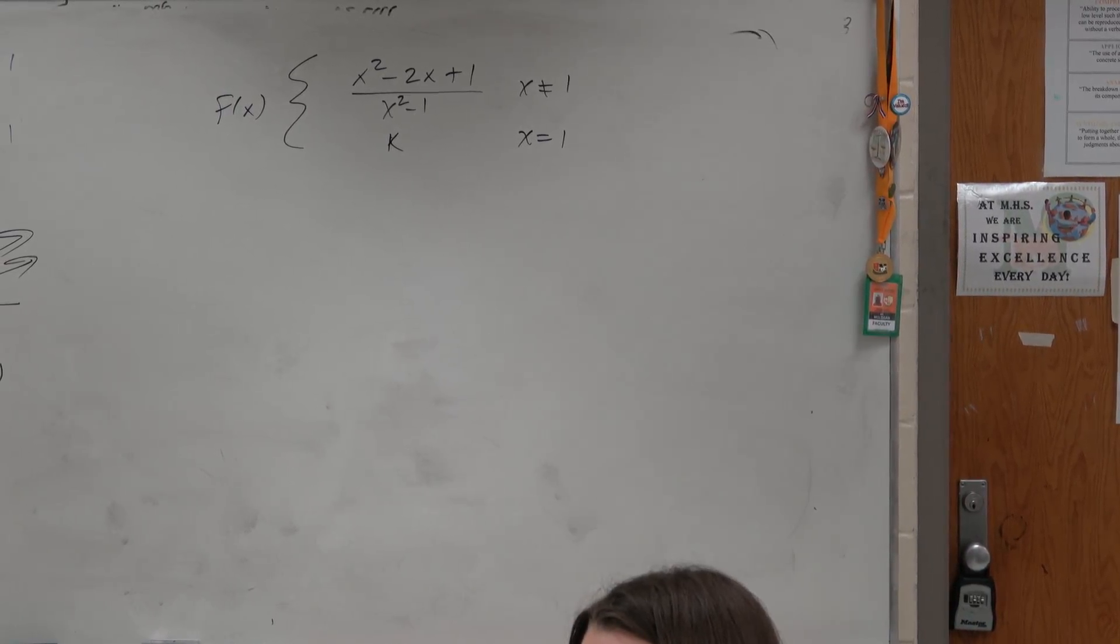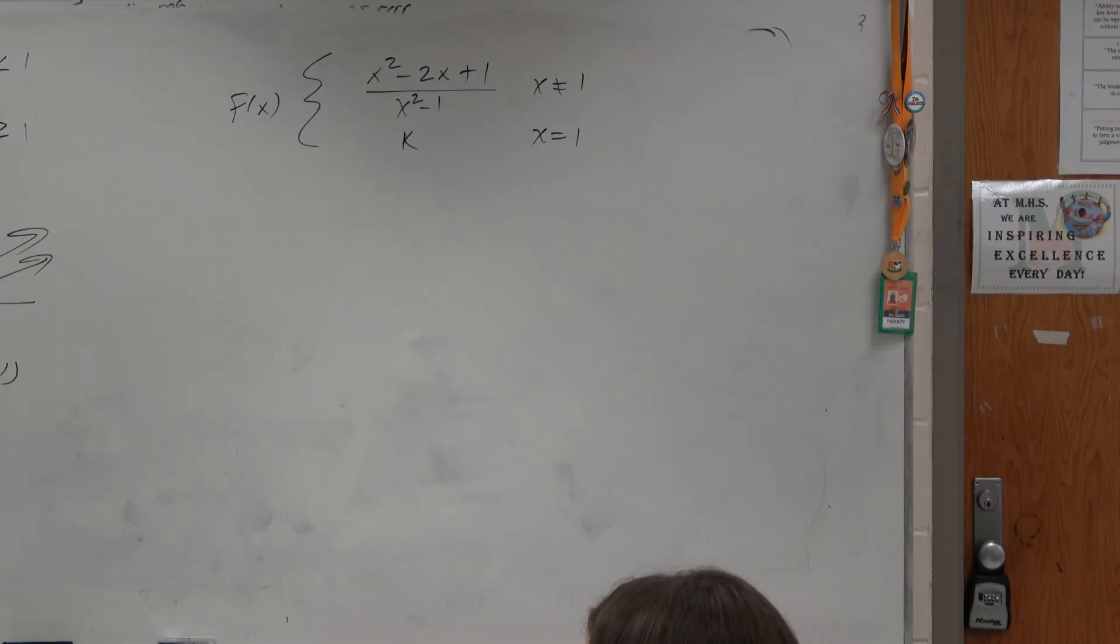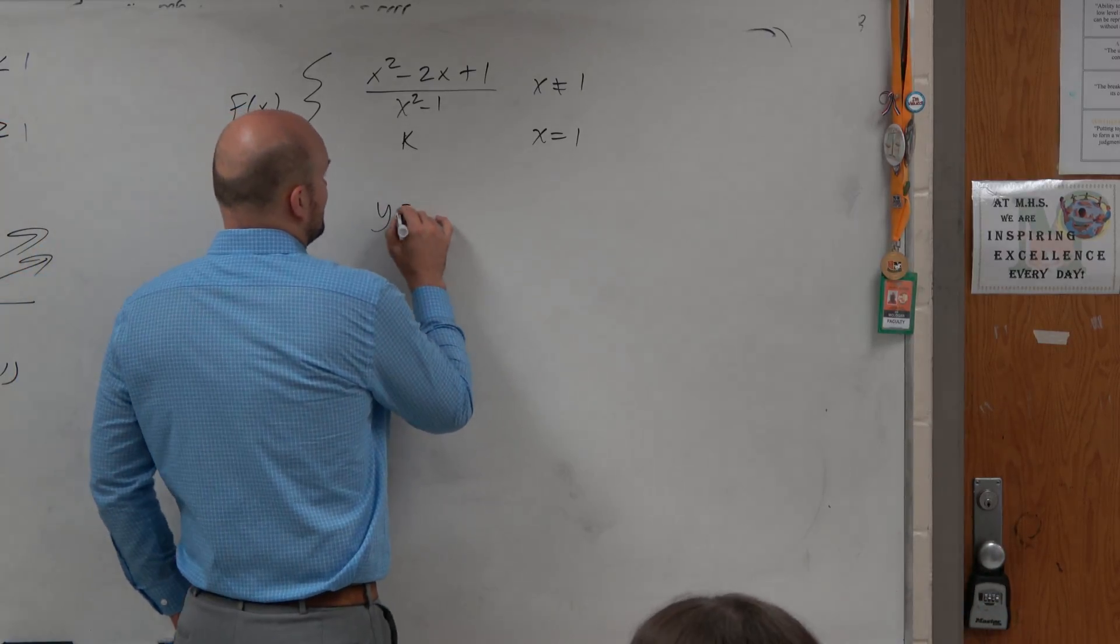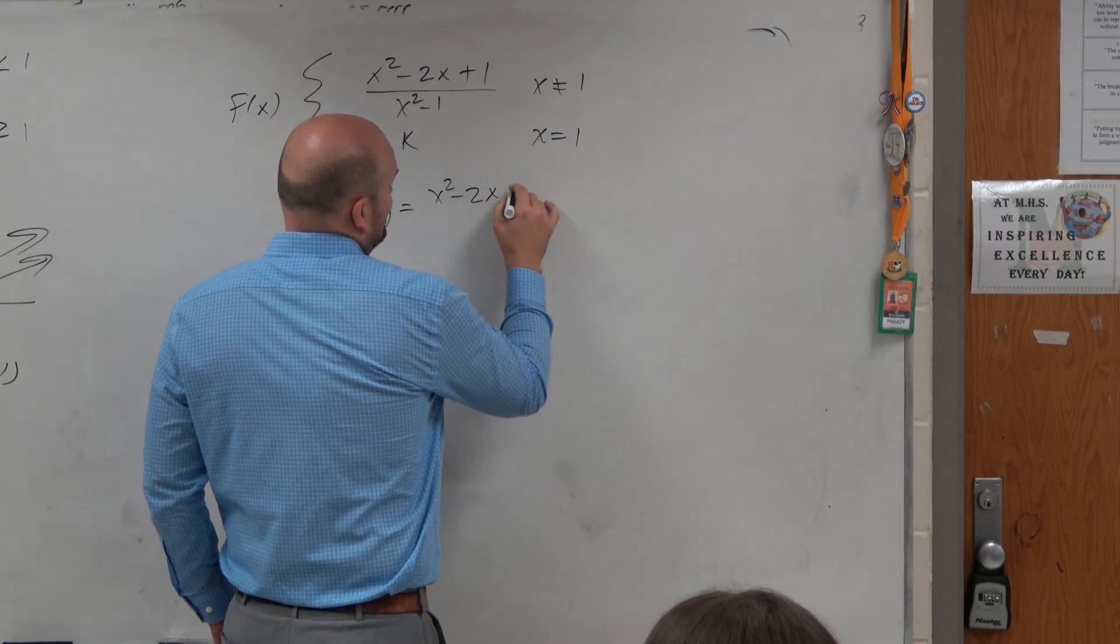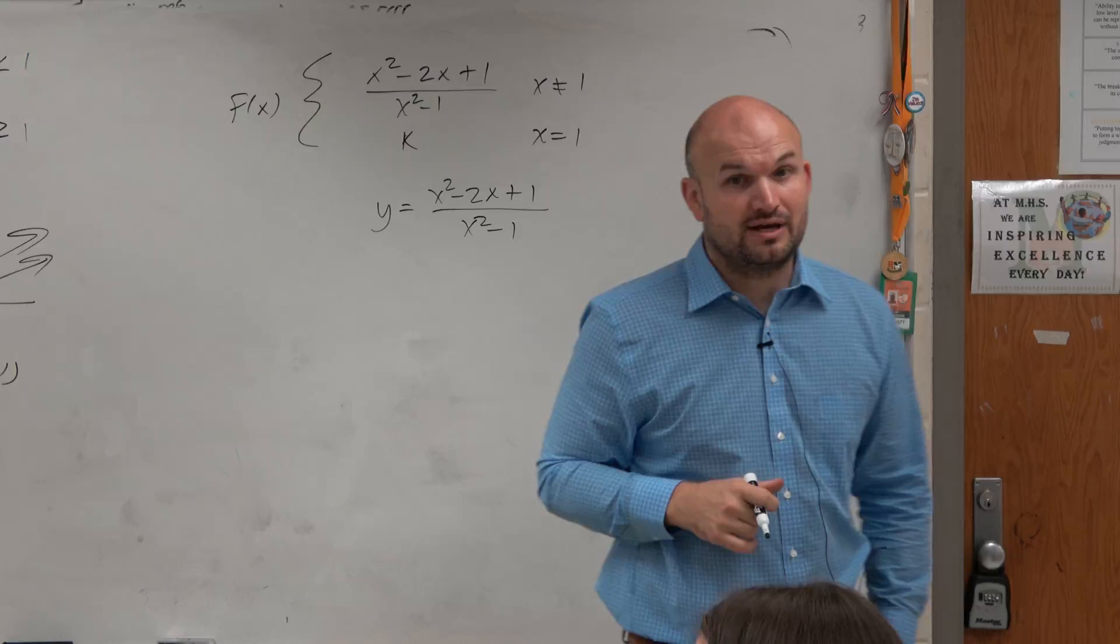I think it's really important that probably many of you will look at this and say, I have no idea what this graph looks like. y equals x squared minus 2x plus 1 over x squared minus 1. Does anybody know what that graph looks like?